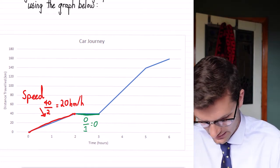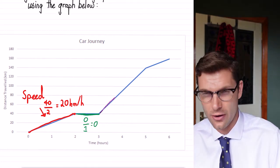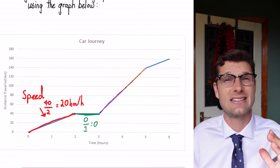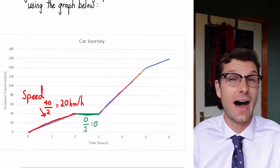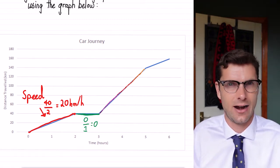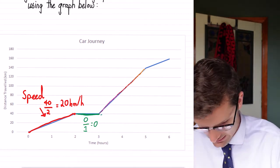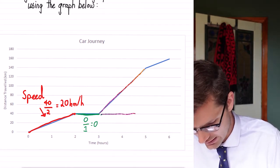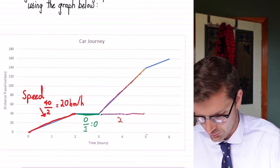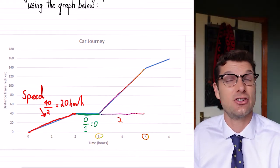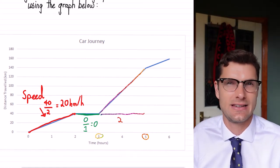From here, we've got this steeper part of the curve. So anytime a curve is steep, it means that we're going to go faster. We're traveling at a faster rate. So we know that this time period is two hours. So that is our five minus three. And then we have to use this same trick to work out the distance traveled.